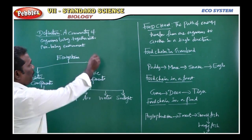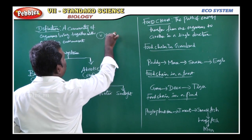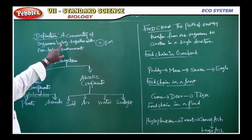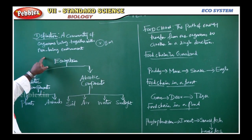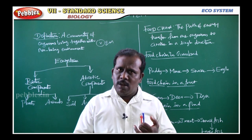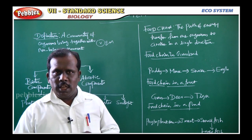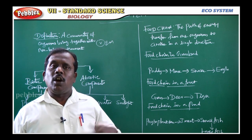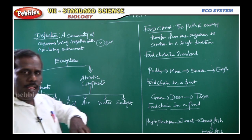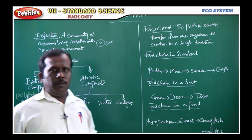Define ecosystem: a community of organisms living together with a non-living environment. The non-living environment includes air, water, light, and soil. These are all considered as non-living environment. So that is the ecosystem — living things related together with non-living things.